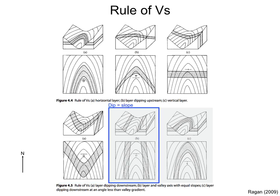The next case is rather rare. The dip of the layer is equal to the slope of the valley. In this case, the outcrop trace consists of two bands parallel to the dip direction.